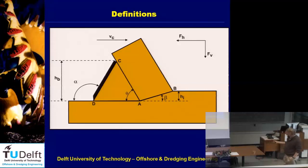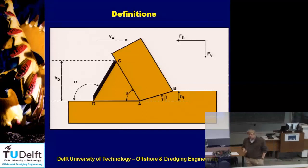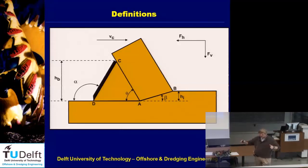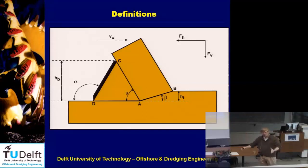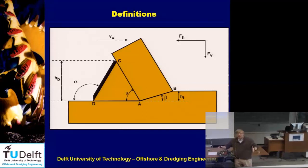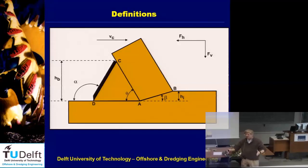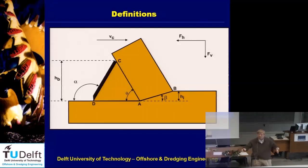So this could be a tunnel boring machine or a drilling device for oil. There are also other options — for example, a clamshell. Usually you drop the clamshell on the soil, meaning the cutting edges in the beginning are at about 90 degrees because it drops vertically. You want those two buckets to penetrate as deep as possible in the soil, so you start with 90-degree blades.